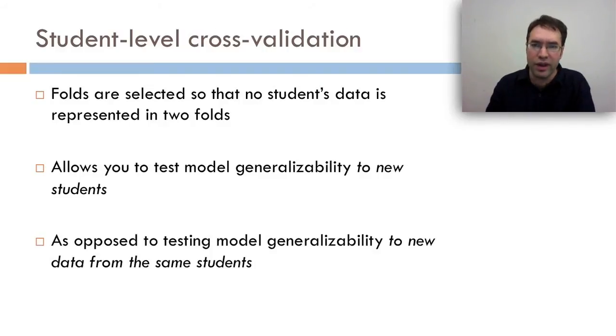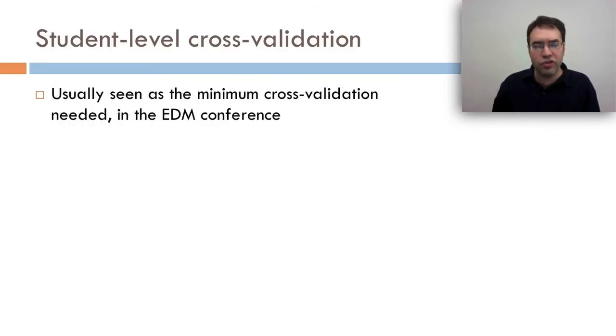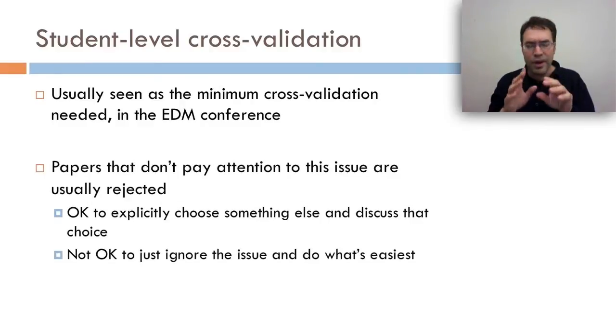Oftentimes, a model will look great for flat cross-validation, but will completely bomb on student-level cross-validation, and if your goal is to work for new students, you better pay attention to that. Student-level cross-validation is usually seen as the minimum cross-validation needed in the Educational Data Mining Conference. Papers that don't pay attention to this issue are usually rejected. It's okay to explicitly choose a different cross-validation scheme and discuss that choice and defend that choice, but it's not okay to just ignore the issue and do whatever is easiest. This becomes an issue especially if you're using tools like Weka that don't have support for student-level cross-validation. Weka's great. It's great for a ton of stuff. It just doesn't have this.